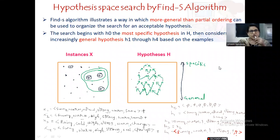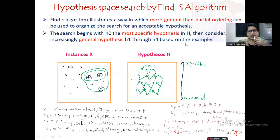In this session, let us discuss hypothesis-based search by the Find-S algorithm. The Find-S algorithm illustrates a way in which a more general than partial ordering can be used to organize the search for an acceptable hypothesis. The search begins with H0, which is the most specific hypothesis in capital H, and then it considers increasingly general hypotheses H1 through H4 based on the examples.